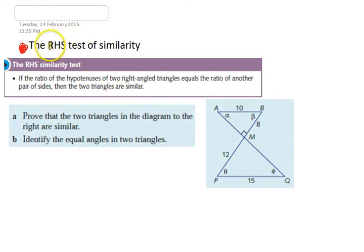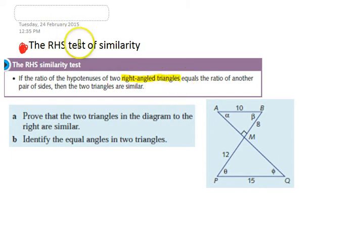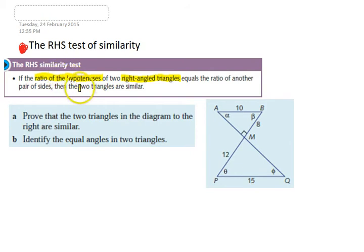The RHS test only works in a very particular example. It stands for RHS: right-angle, hypotenuse, side. First of all, your triangles need to be right-angle triangles — if they're not, the RHS test is dead and you can't use it. You also need the ratio of the hypotenuses, and then if one more pair of sides has that same ratio, then you've got similar triangles.